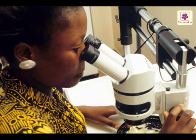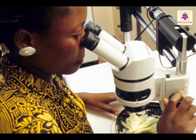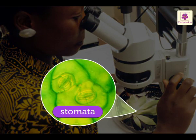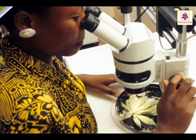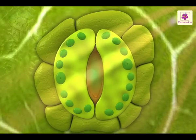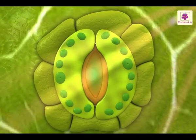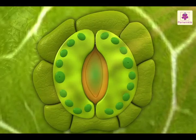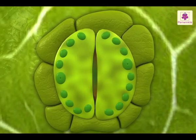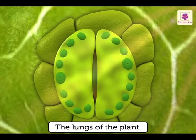If we observe a leaf section under a microscope, we will find small pores on the undersurface of the leaf. These pores are called stomata. The stomata help to absorb gases from the air and also give out gases. We can also call the leaves the lungs of the plant.